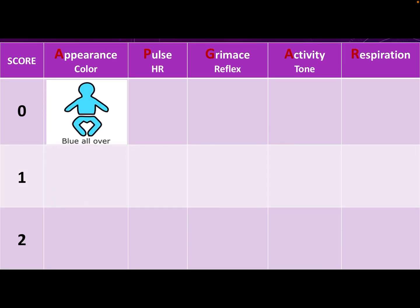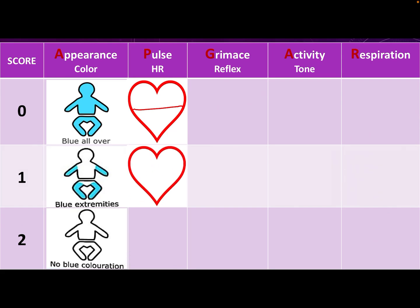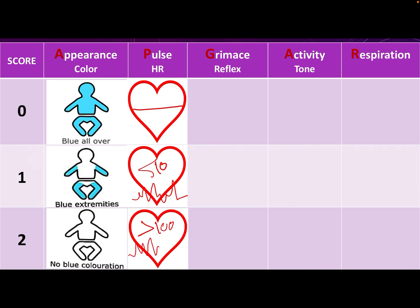For the color or appearance: if the baby is totally blue or pale, he scores zero. With acrocyanosis or peripheral cyanosis, the baby scores one. If the baby is totally pink, he scores two. For the heart rate or pulse: if the baby has no heart rate, he scores zero. If the heart rate is less than 100, the baby scores one. If the heart rate is more than 100, the baby scores two.